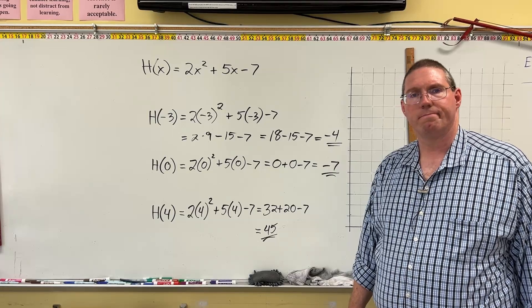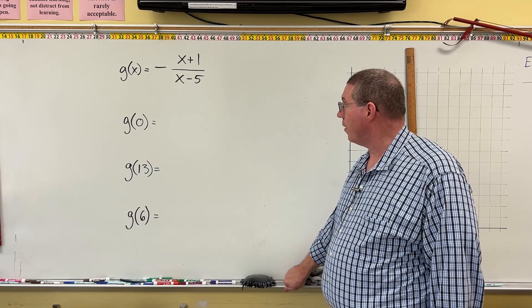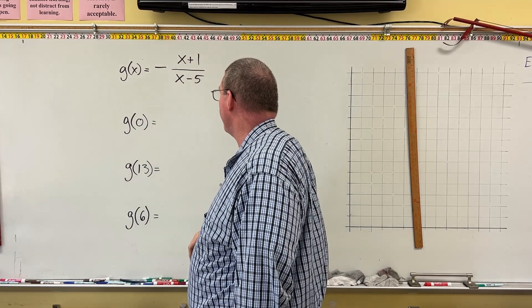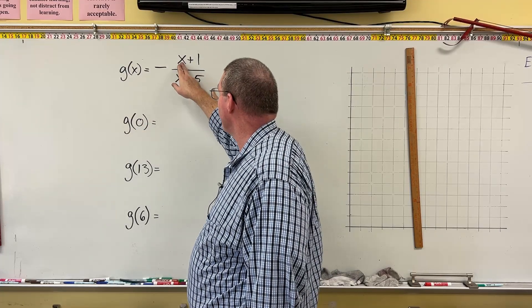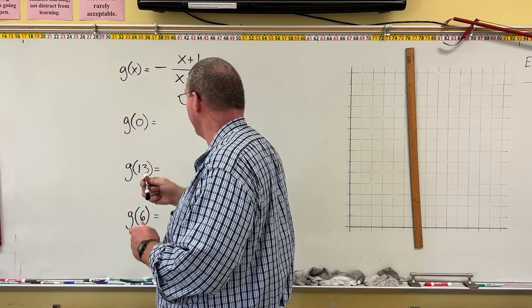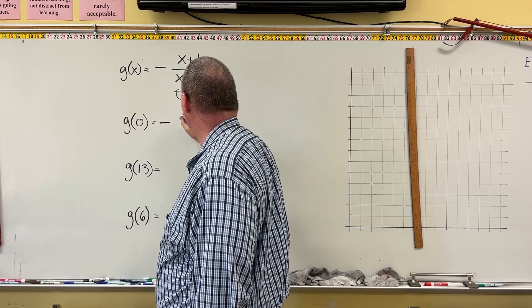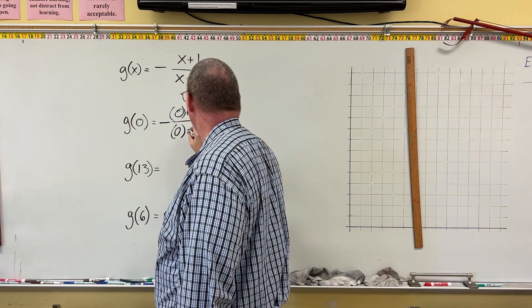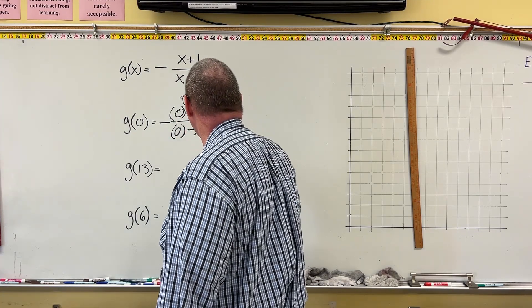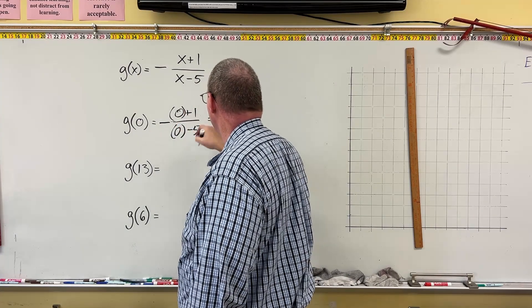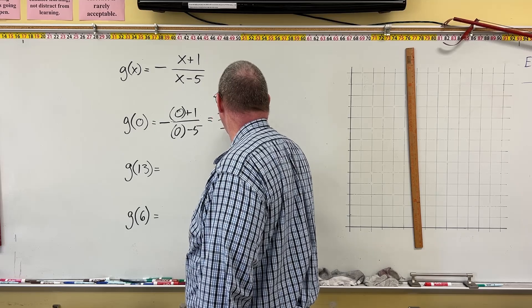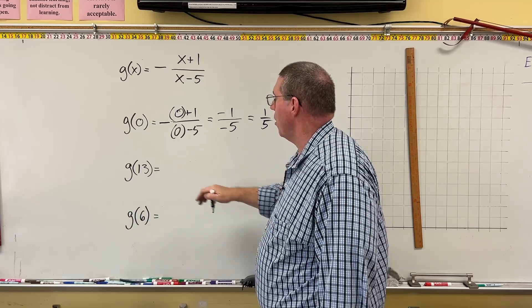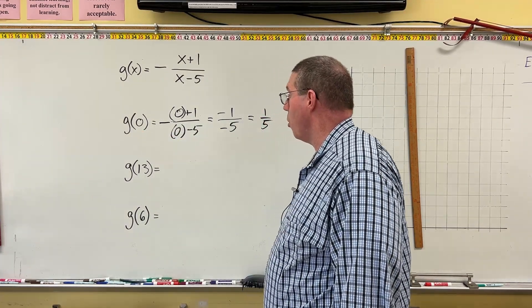Let's do one more example with a rational function. g(x) = −(x + 1) / (x − 5). For g(0), we put 0 in for x: the negative of (0 + 1) over (0 − 5). Don't forget the negative. That's −1 over −5. A negative divided by a negative is a positive, so g(0) = 1/5. Input is 0, output is 1/5.